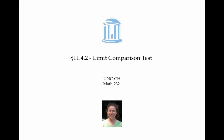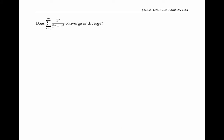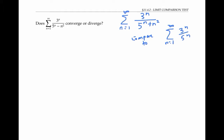The limit comparison test gives an alternative to the ordinary comparison test for series. In the previous video, we looked at the series — the sum from n equals one to infinity of three to the n over five to the n plus n squared. We used the ordinary comparison test and compared to the series, the sum of three to the n over five to the n. This worked out nicely because the terms here are less than the terms there, and since this series converges, being less than a convergent series ensures convergence.